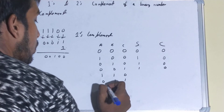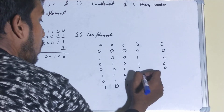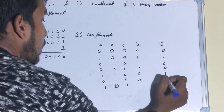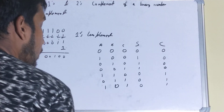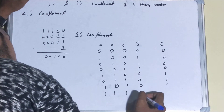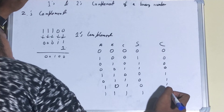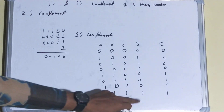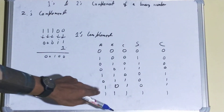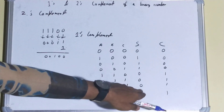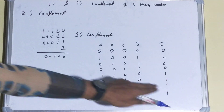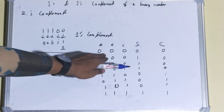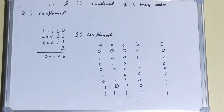Continuing the three-number addition rules: if two numbers are one, sum is 0 and carry is 1. If all three numbers are one, sum is 1 and carry is 1. So to summarize: all three ones → sum 1 carry 1; two ones → sum 0 carry 1; one one → sum 1 carry 0; all zeros → sum 0 carry 0. Keep these rules in mind when adding during twos complement.